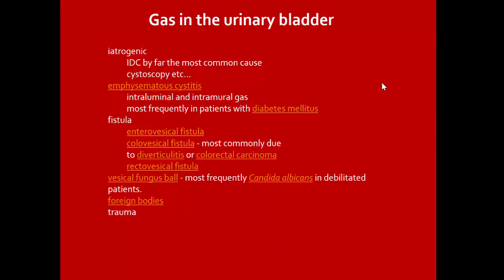Differential diagnosis of gas in the urinary bladder: iatrogenic cause — by far the most common — such as cystoscopy. Emphysematous cystitis with intraluminal or intramural gas, most frequently in patients with diabetes mellitus. Fistula — colovesical fistula most common due to diverticulitis and colorectal carcinoma; rectovesical fistula. Fungal — most frequently Candida in debilitated patients. Foreign body or trauma may also cause gas in the urinary bladder.